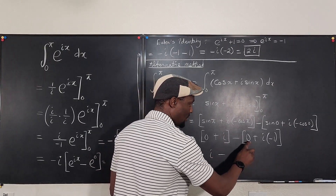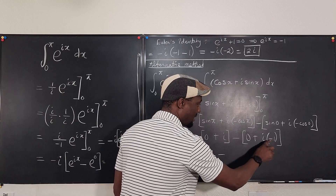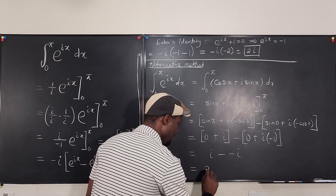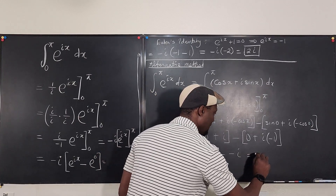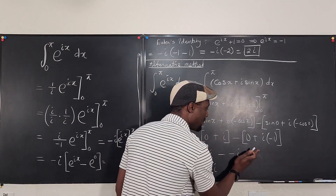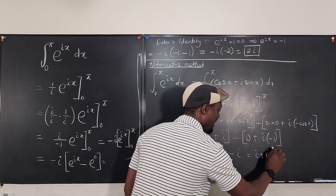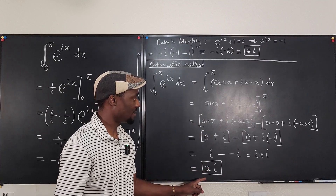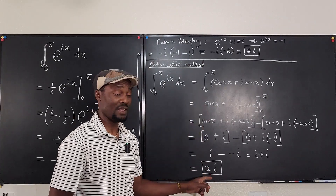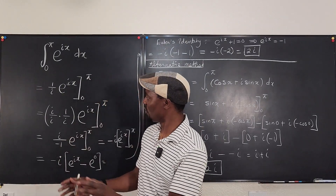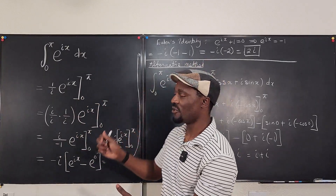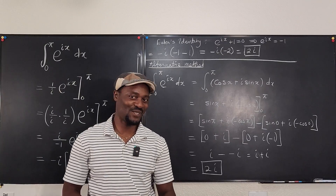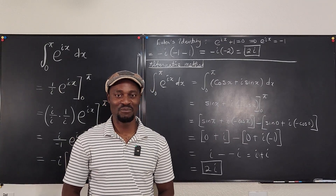Combining: i minus negative i gives i plus i, which equals 2i. You can take this easier path using Euler's formula substitution, or brute-force it with direct integration and then apply Euler's identity — either way you get 2i. Never stop learning; those who stop learning have stopped living. Bye!